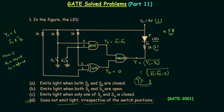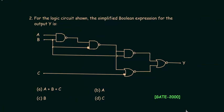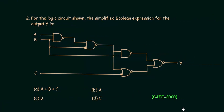Now we move to the second problem, which appeared in the GATE 2000 paper. We have to calculate the output of the given circuit with inputs A, B, and C, and output Y. First we find the output of the first gate, which is simply (A · B)' — A AND B, whole complement.